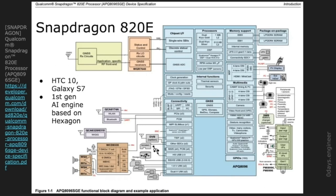On the most recent models there is not just one Hexagon processing unit but several, each called by its purpose. For example, MDSP handles the modem and runs the real-time operating system; ADSP handles media; and CDSP handles compute. The Hexagon DSPs represent around half of the processing power on modern Snapdragons.